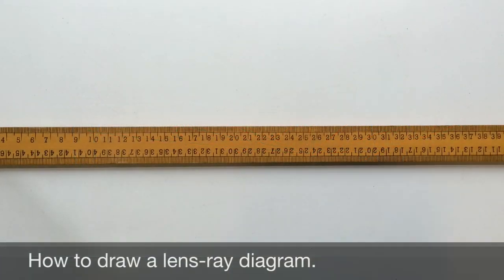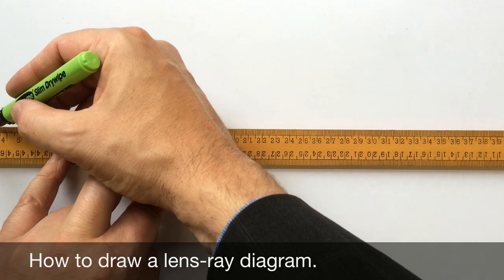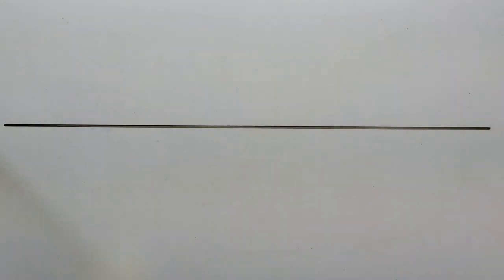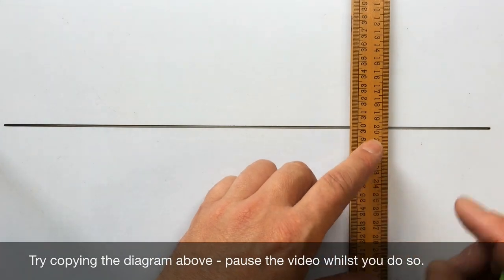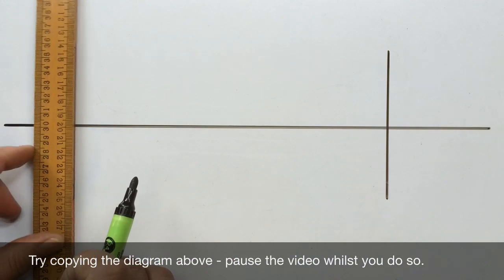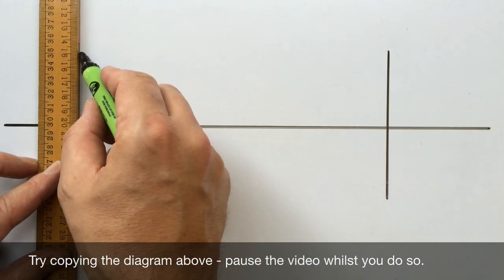To draw a lens ray diagram for the astronomical telescope, start by drawing a horizontal line across your page which is going to represent the principal axis. Then draw two vertical lines, one on the right hand side to represent your eyepiece and one on the left hand side to represent your objective lens.